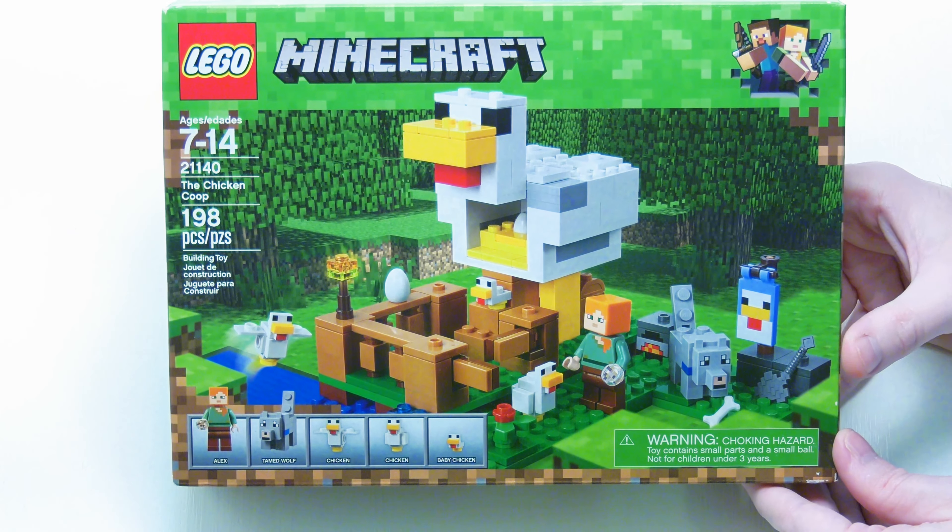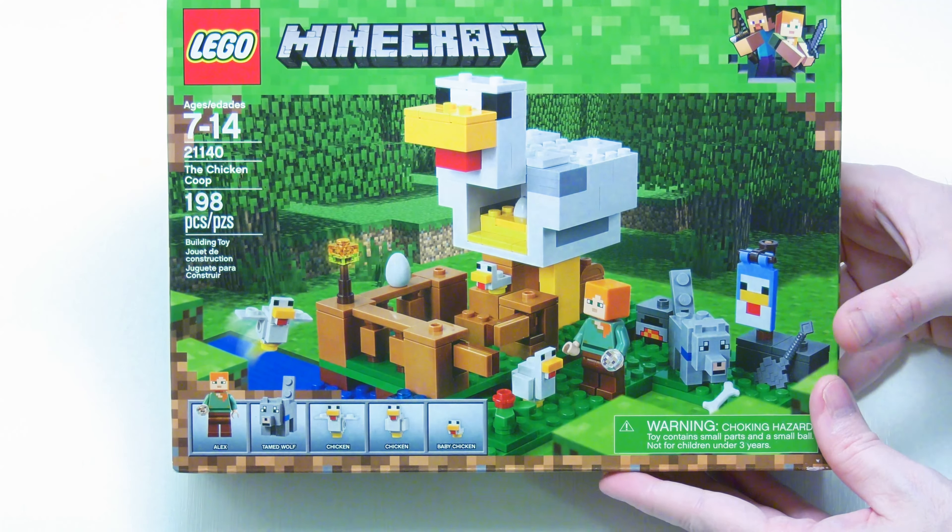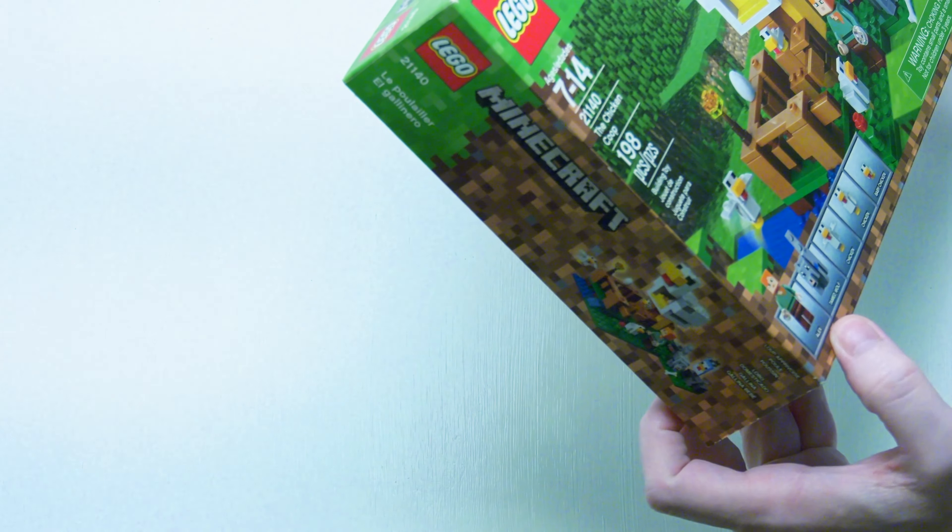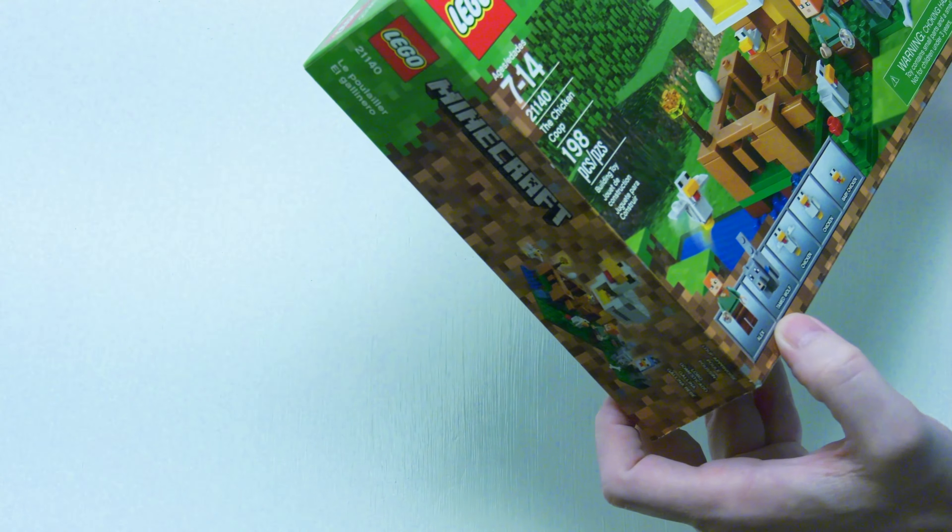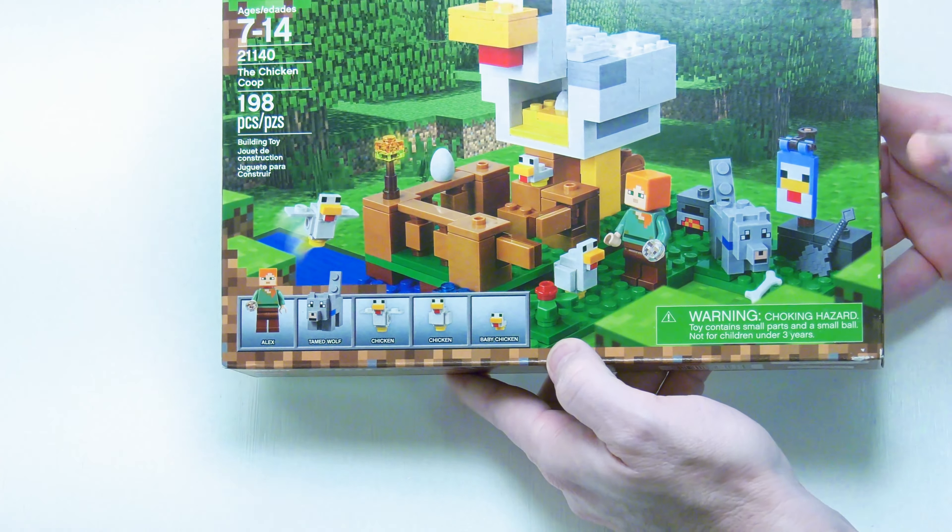Here we have a large chicken and some other various accessories. It looks like we have Alex, a tamed wolf, two chickens, and a baby chicken that are included.